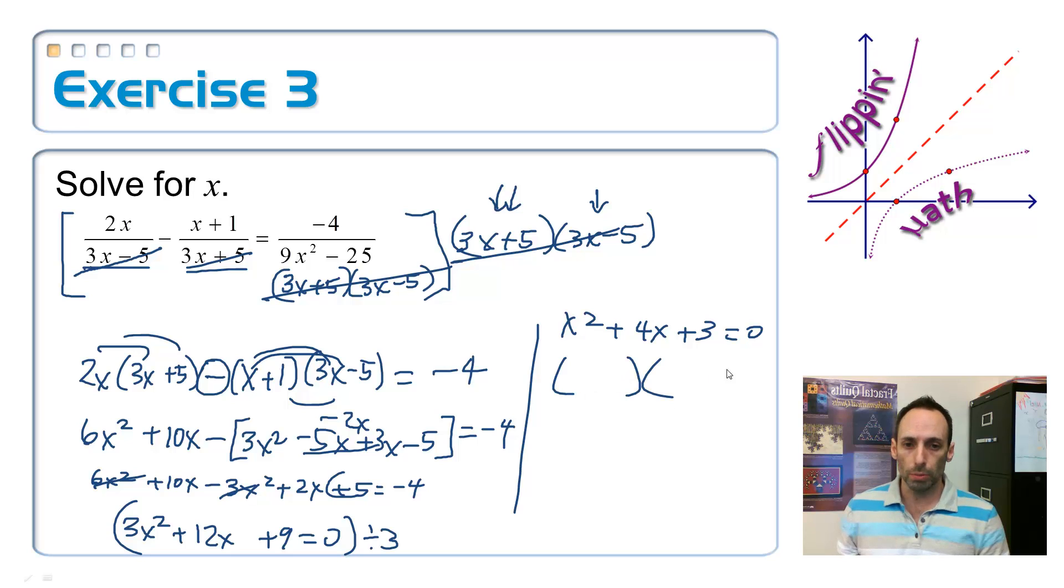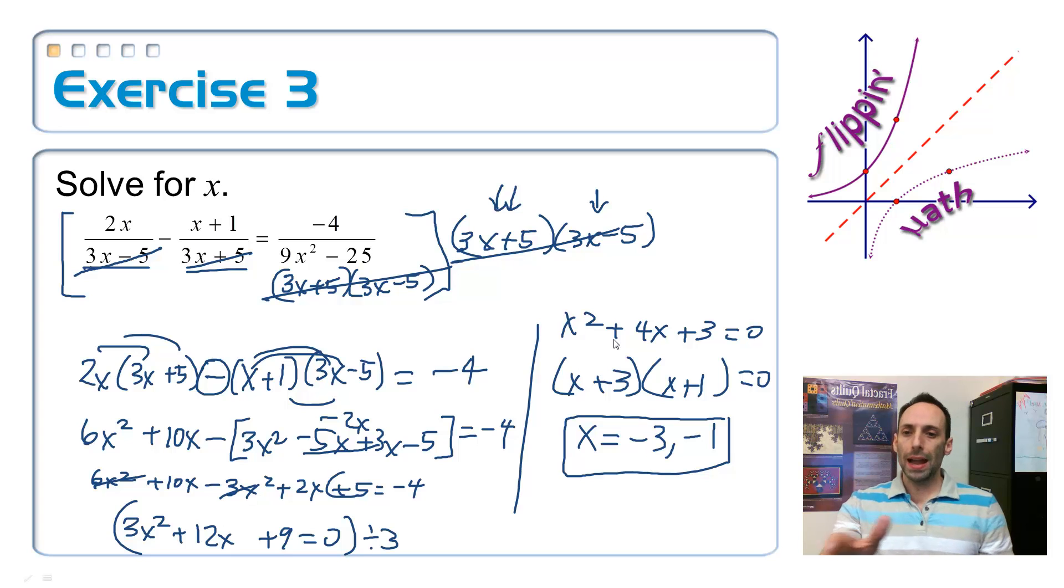This is going to be easy. So x and x, a 3 and a 1, a plus and a plus. Which means that my answer is x equals negative 3 and negative 1. So there are my two answers, negative 3 and negative 1. Look back at the problem. Is there any kind of way that's going to make a division by 0 with either negative 3 or negative 1? No, it's not. So I think I'm going to be okay with those two answers.